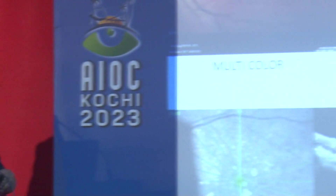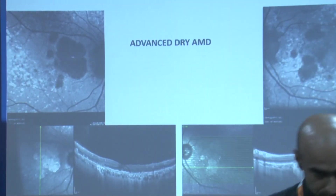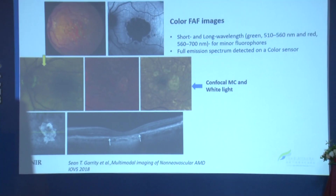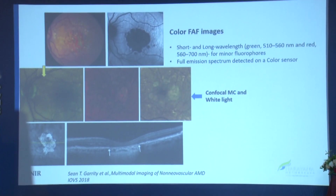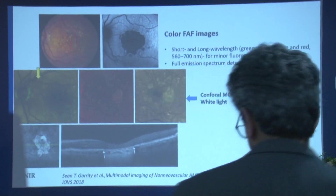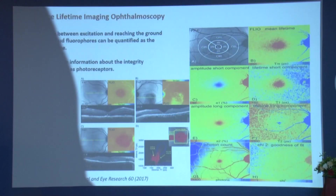These are the gamut of images we have. There have been quite a few classification types. If you look at multicolor images, how they appear, FAF, and even advanced dry AMD — you can look at atrophy that progresses over a period of time. There are studies which have compared these multifocal images and the FAF that changes over time.